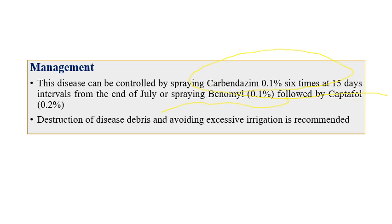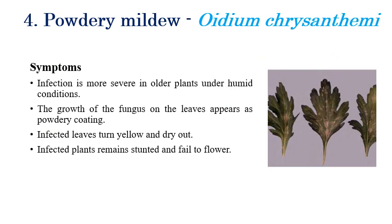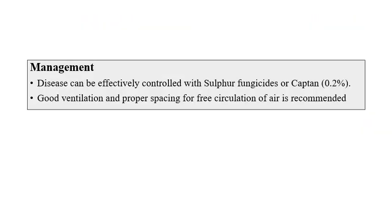Powdery mildew is caused by Oidium chrysanthemi. White powdery growth can be seen initially on the lower surface of leaves, later appearing on the upper surface as well. It is especially severe in humid weather. Symptoms also include yellowing, drying of leaves, and stunting of plants. Infected plants fail to produce good flowers. Management includes sulfur fungicide or captan application at 0.2%, proper ventilation, and appropriate plant spacing.